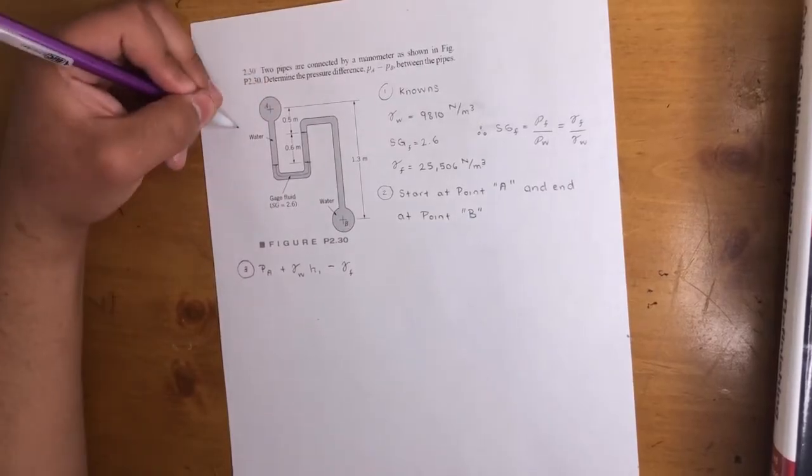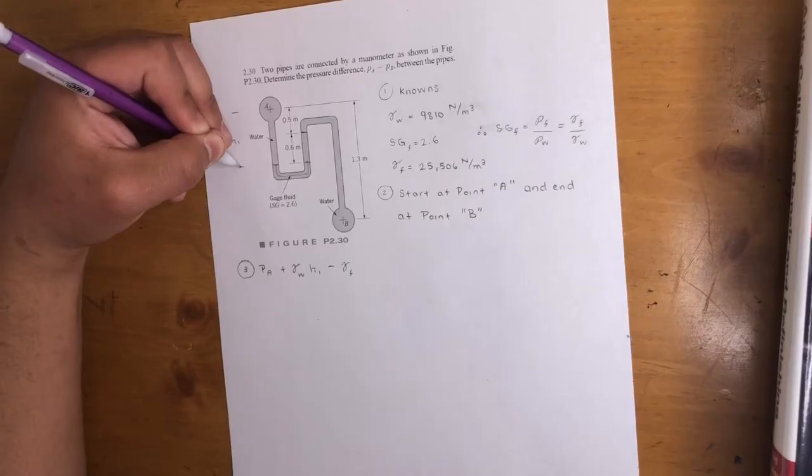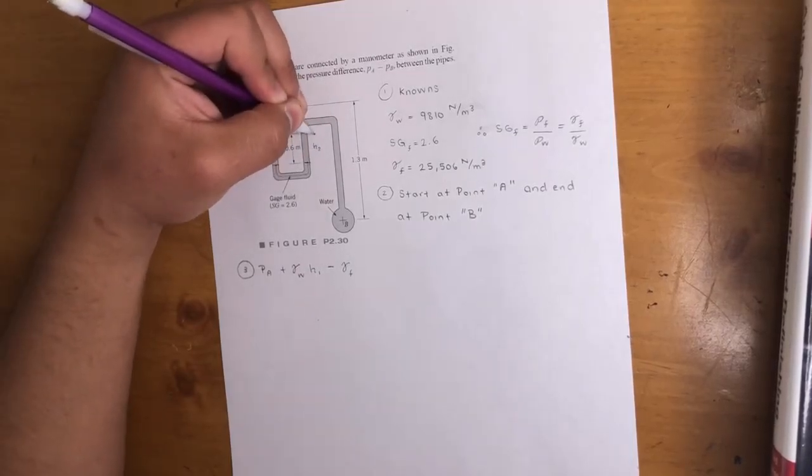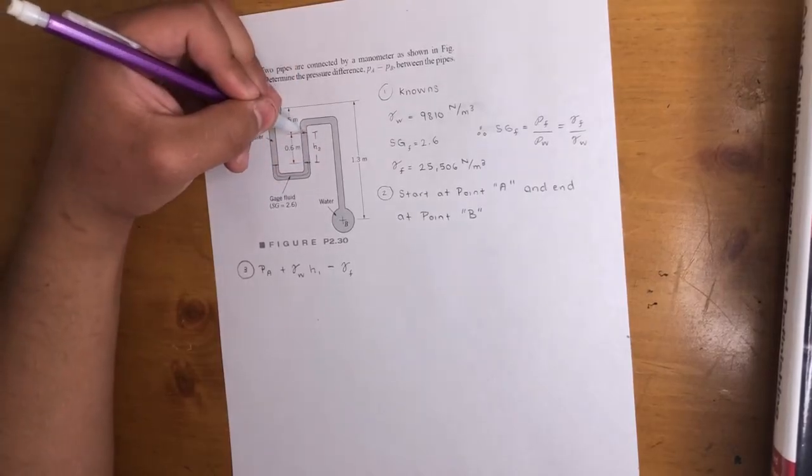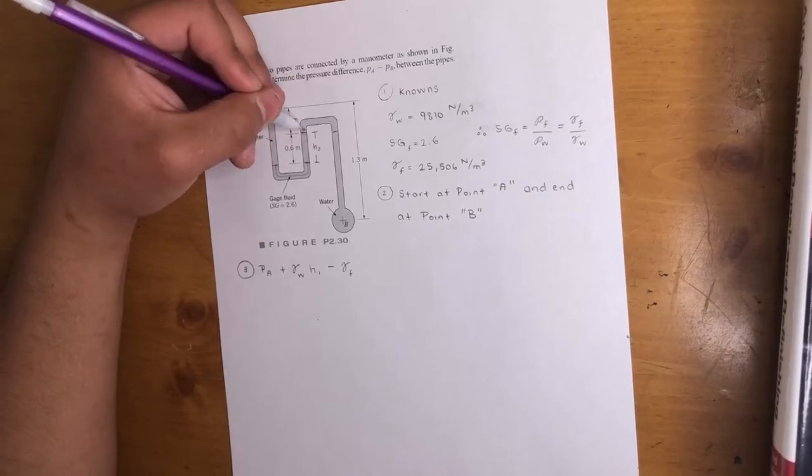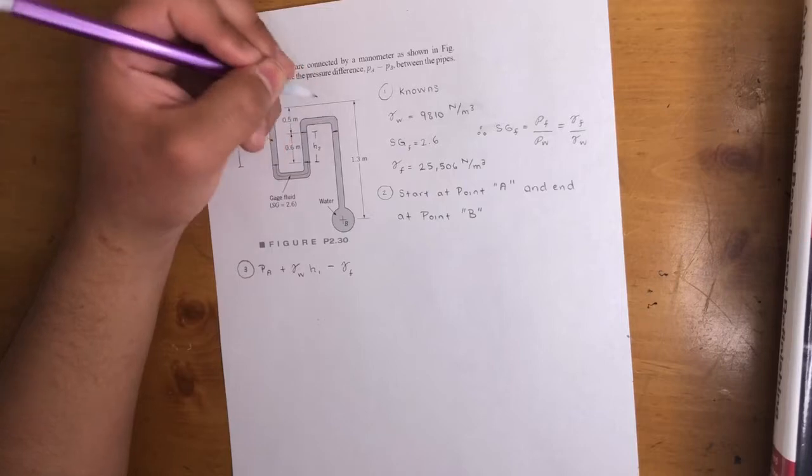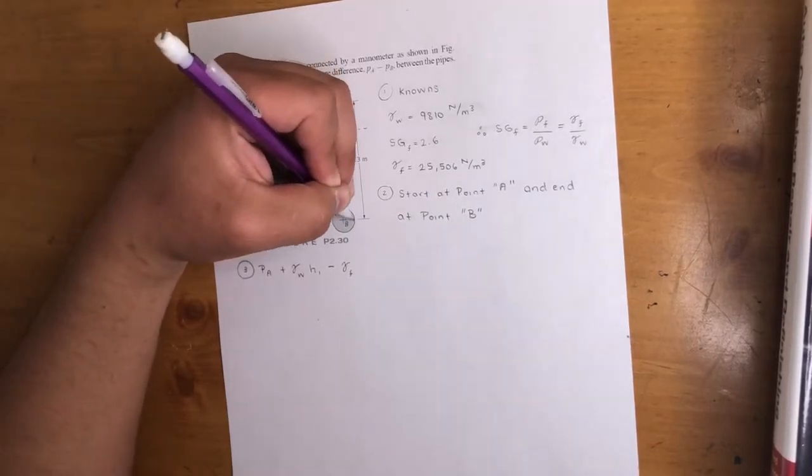So we're going to negative gamma of the fluid. All this is gamma fluid times 0.6, this height up until this line. Just to not confuse you guys, this is height one right there. This is height two, from this point to this point. And then this height, same here because all of this is water, so we just transfer all the way over here. Height three will be this one.